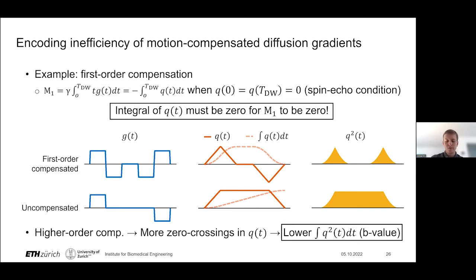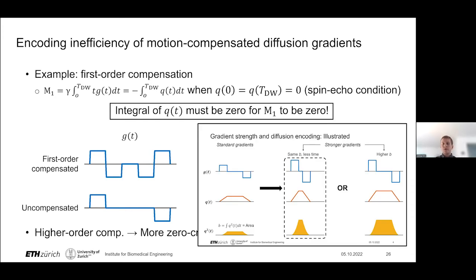This disadvantage becomes even worse as we increase the order of motion compensation, because more zero crossings will be required in q(t) as we must null higher-order integrals, resulting in a lower b-value. By using strong gradients, we address this using the first method mentioned: aiming for a certain b-value and doing so in less time. Achieving a b-value of 1000 with first- or second-order compensation would result in too long an echo time on a standard system, but doing so with stronger gradients suddenly becomes much more feasible.